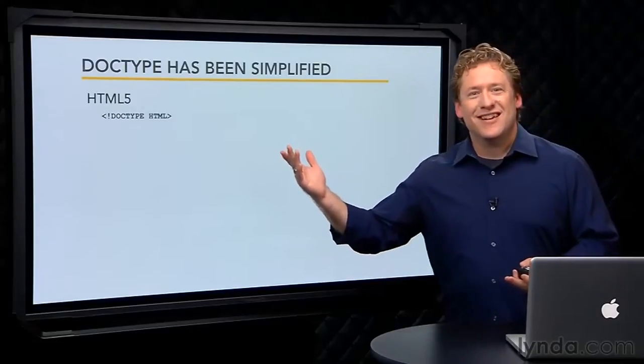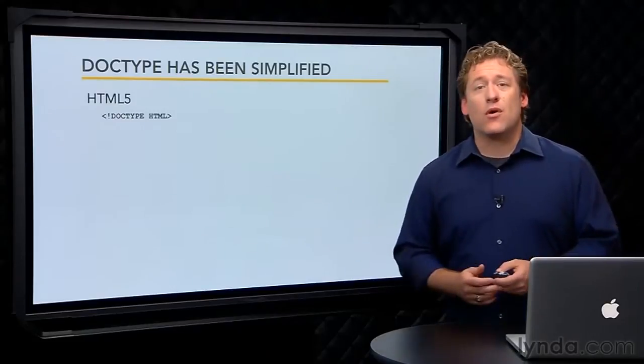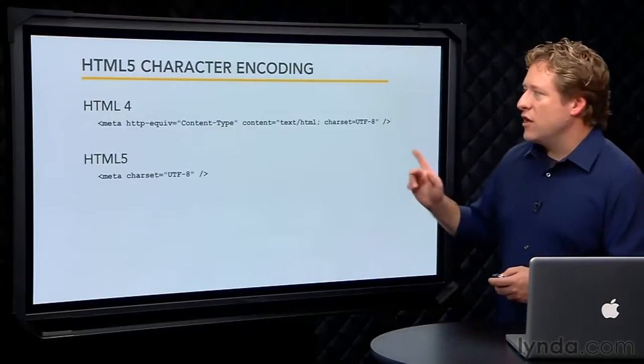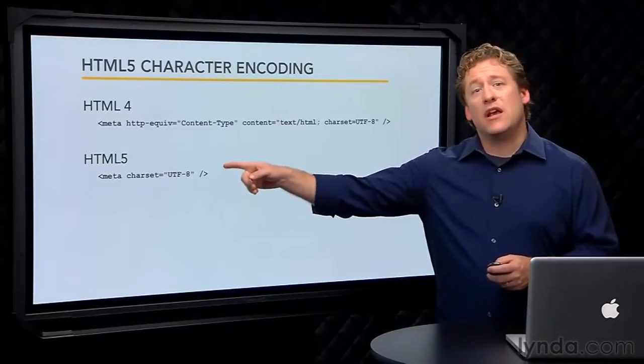Look how simple that is. Since HTML is no longer SGML based, no document type definition is actually required at all. Character encoding is likewise simplified. All that's required now is a meta tag with a charset attribute.